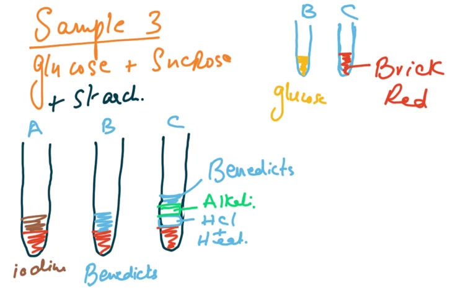Sample 3 contains glucose, sucrose, and starch. Performing the iodine test will be very clear — the solution will turn from brown to blue-black, confirming starch is present. This is categorical evidence that starch is in the sample.